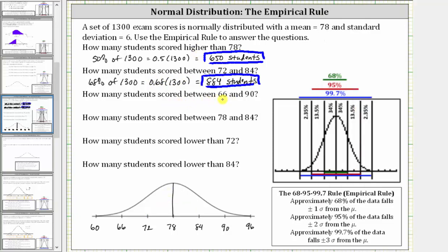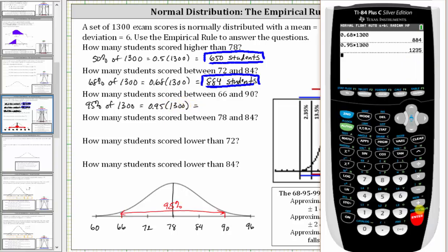Next, how many students scored between 66 and 90? Notice 66 and 90 are two standard deviations from the mean. The empirical rule tells us approximately 95% of the data falls within plus or minus two standard deviations from the mean. Therefore 95% of the students scored between 66 and 90, so we need 95% of 1,300, which is 0.95 times 1,300, equaling 1,235 students.